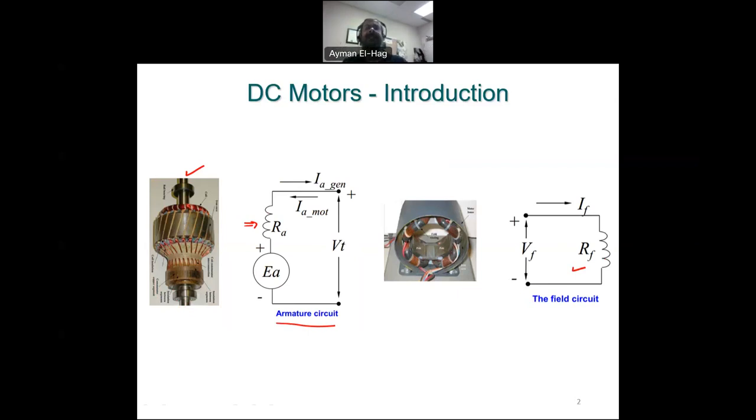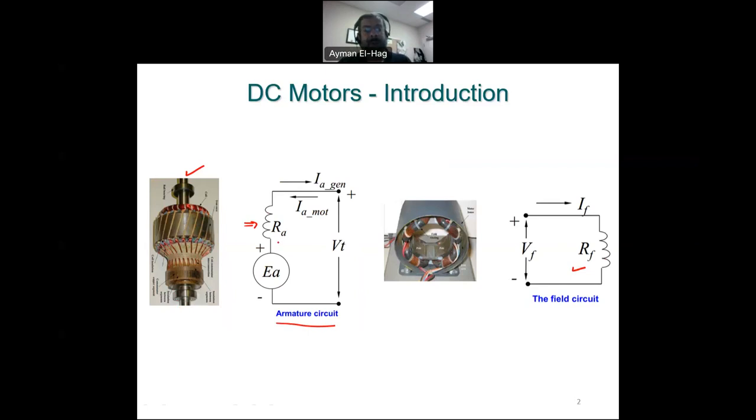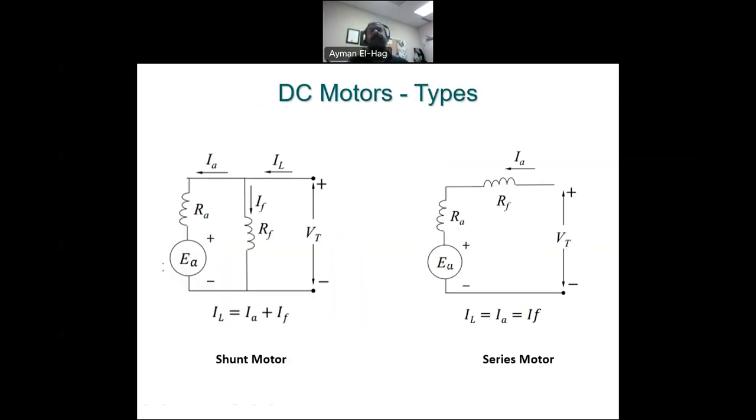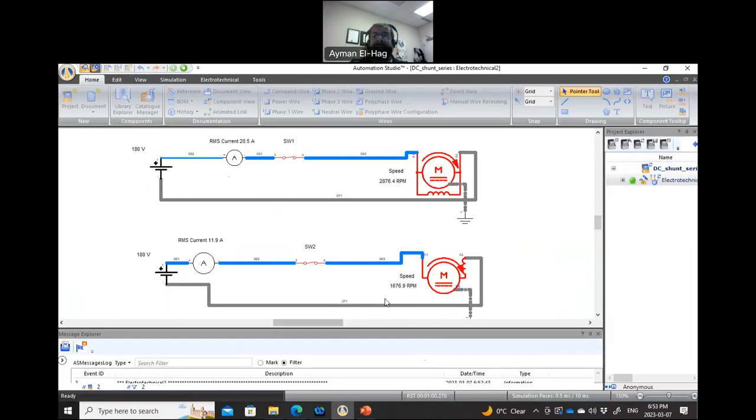So basically, these two different types of DC motors, the shunt and the series, refer to how we connect these two windings—how we connect the armature winding with the field windings. The word shunt means parallel, so we connect the armature winding and the field winding in parallel to the voltage. The voltage we apply is the same across these two windings. On the other hand, the series motor has the armature winding and the field winding connected in series. So let's have a look at the package and see how the speed of the motor is affected when we compare these two different types of motors.